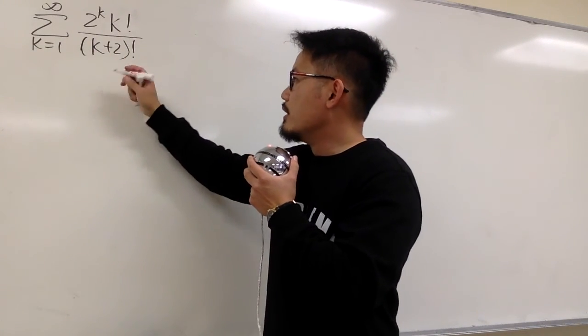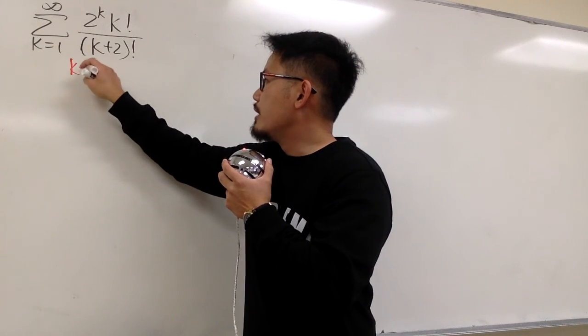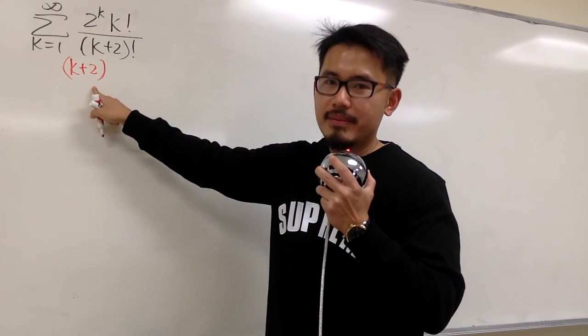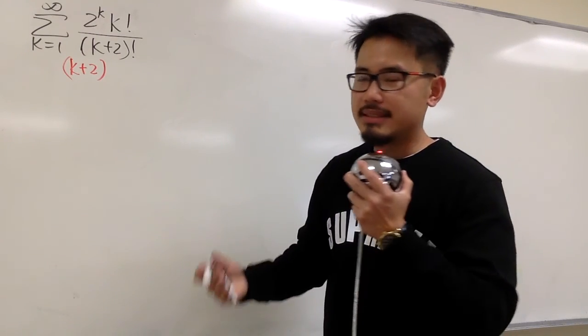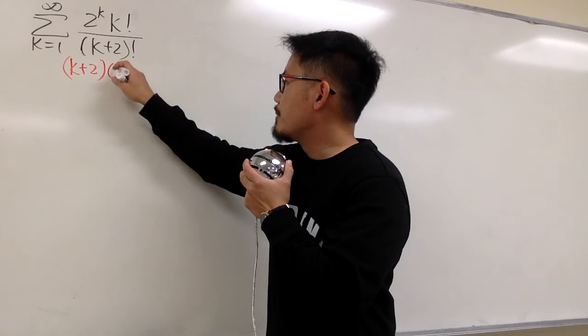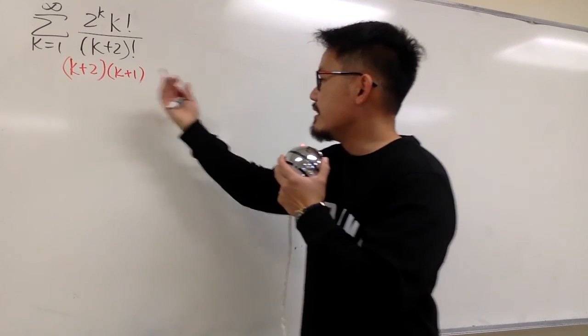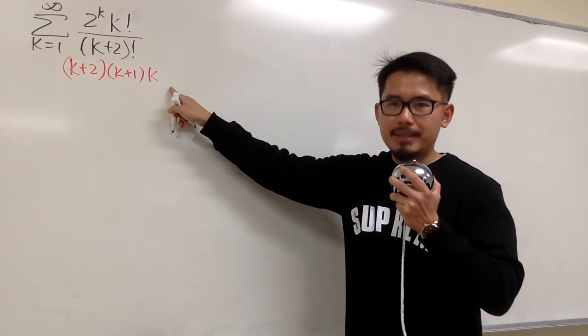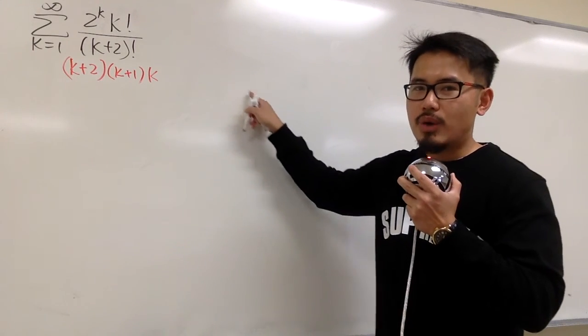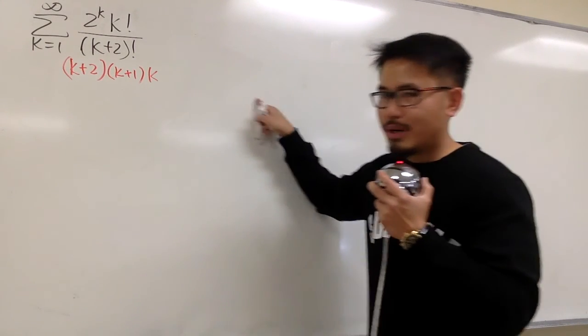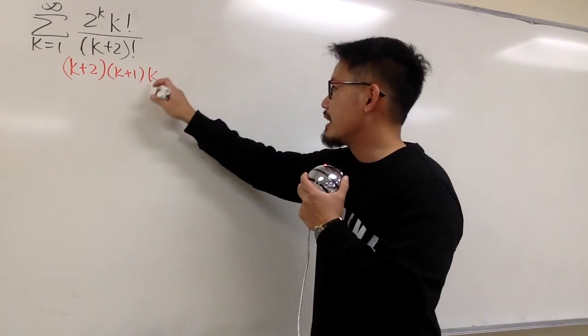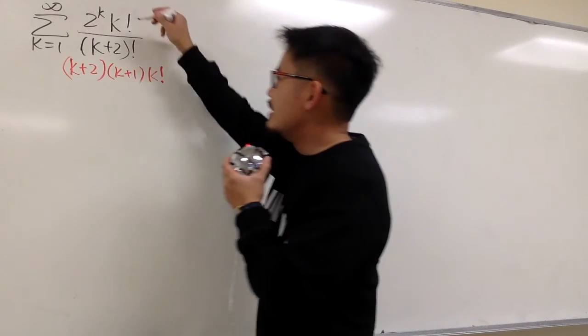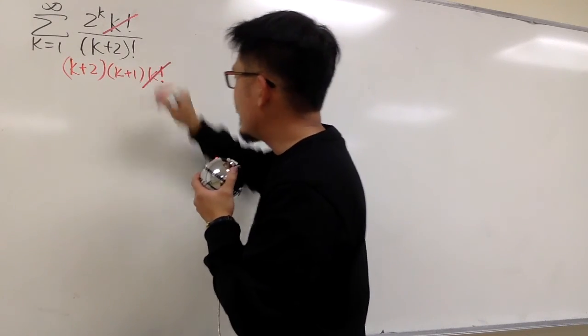k plus 2 factorial is the same as saying we first put down whatever we have in the parentheses, the k plus 2, and then the next factor it's going to be 1 less. So we are going to have k plus 1, and the next one is going to be k, and then the next one is going to be k minus 1, and then k minus 2, and so on. But then all this right here is just the same as k factorial. And now we can cancel this k factorial and this k factorial.